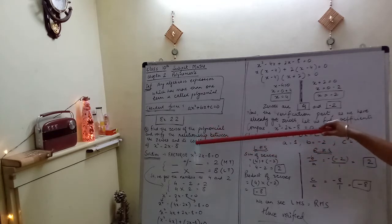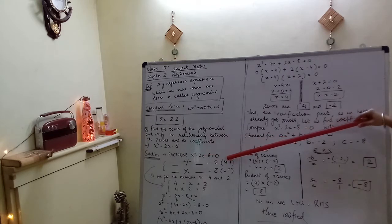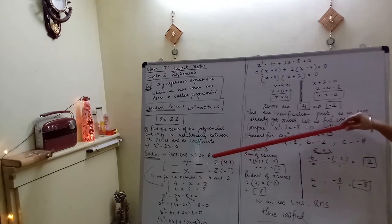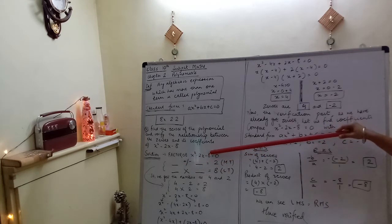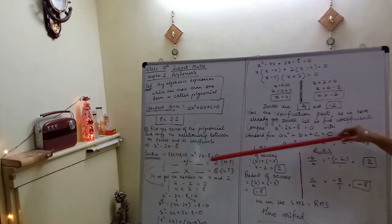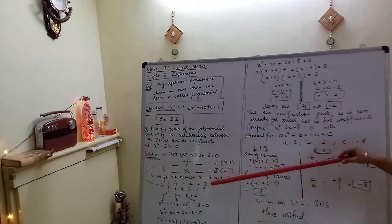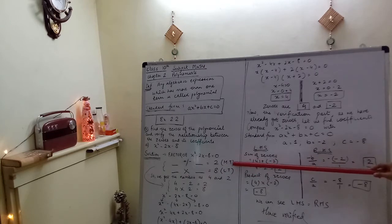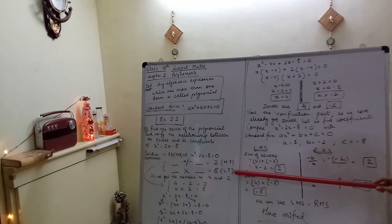Middle term ko split karna hai, break karna hai. For that we need two numbers which when added or subtracted give the middle term, that means 2. And when multiplied give the last term, that is 8. So we get the numbers as 4 and 2, because 4 minus 2 will give you 2, middle term, 4 multiply by 2 will give you 8, that is the last term.